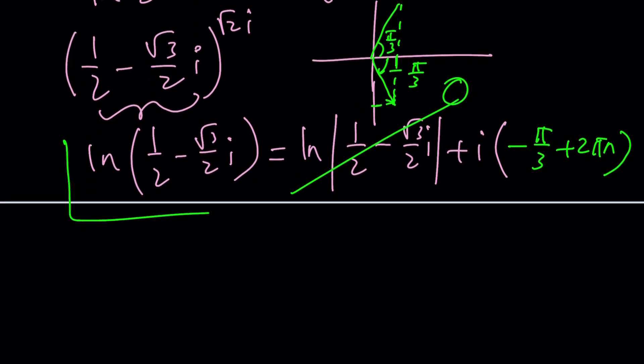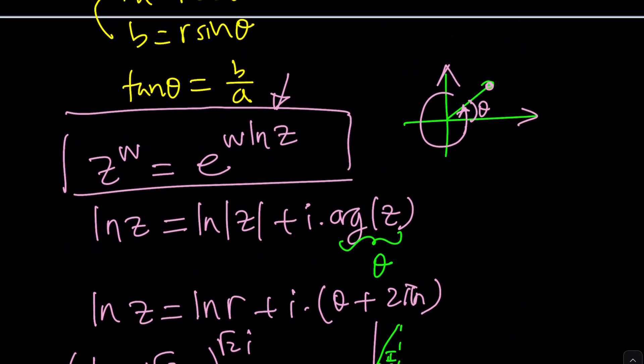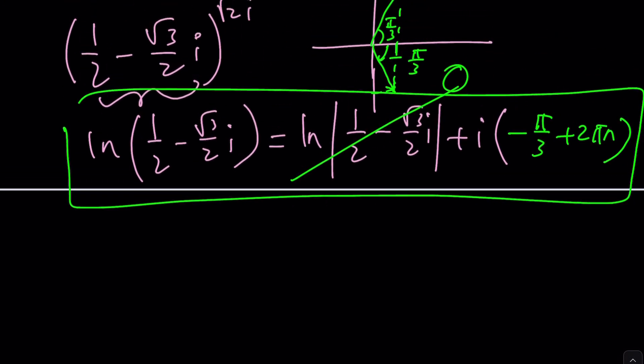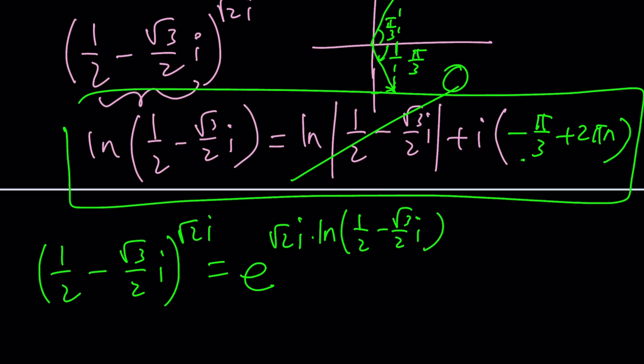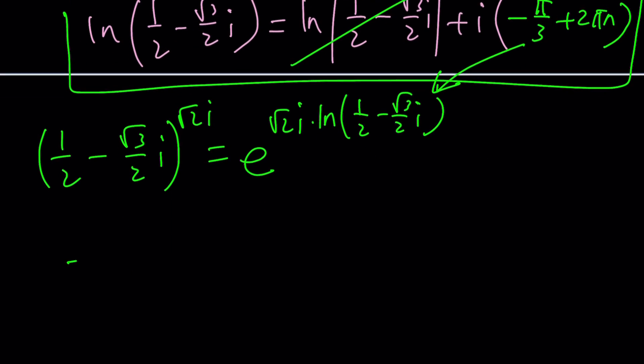So one half minus root 3 over 2i to the power root 2i is e to the power root 2i times ln one half minus root 3 over 2i, which is this one right here. So now we can write this as e to the power root 2i multiplied by i times negative pi over 3 plus 2 pi n.